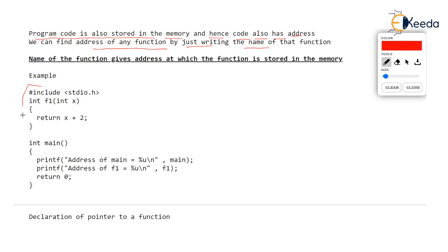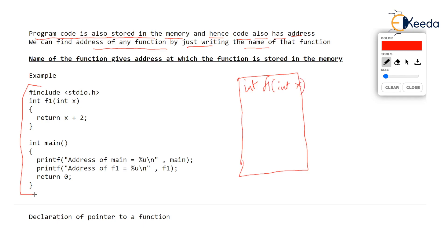This program is stored in the memory. So if you imagine this block of memory, this function int f1 which takes int x, written on top of the program, will have some address from where it begins — maybe address is 100. And also int main, which is also a function, will also have some base address, maybe 200 from where the function starts. So the code is there in the main memory and code always has an address.